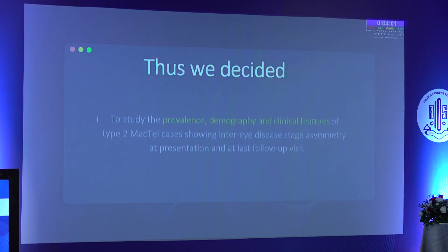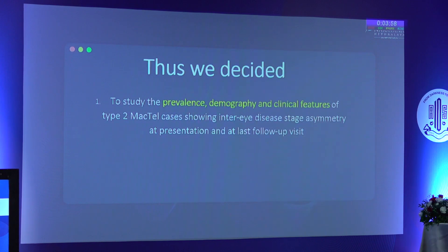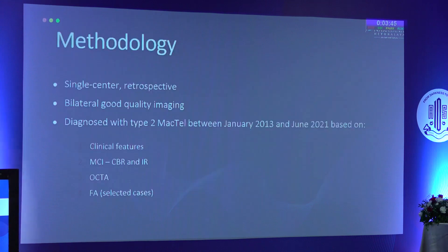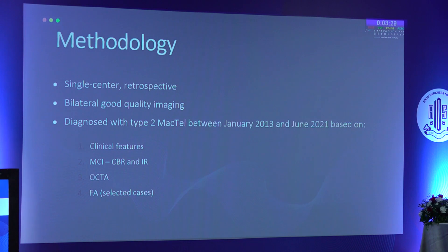In this backdrop, we decided to study the prevalence, demography, and clinical features of type 2 MacTel cases showing inter-eye disease stage asymmetry at presentation and at last follow-up. We also evaluated cases of MacTel with what we described as apparent unilateral disease. Ours was a retrospective single-center study wherein bilateral good-quality imaging cases were included, and we studied clinical features, multicolor imaging, OCT angiography, and fundus fluorescein angiography in selected cases.